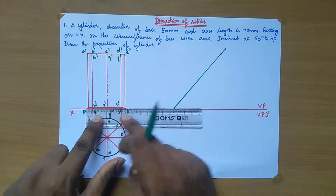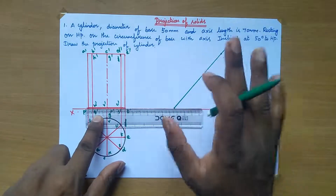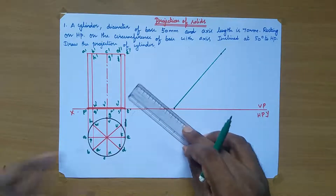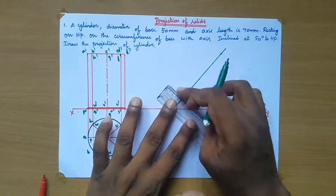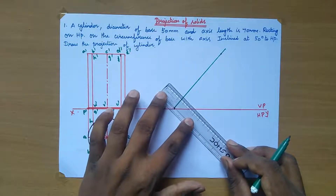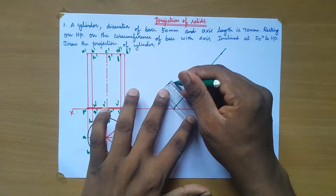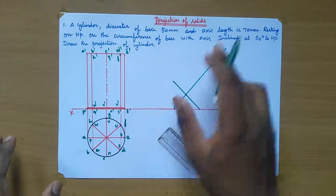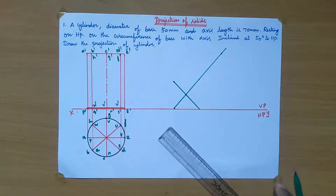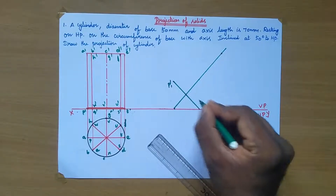At any point, place your protractor and take 50 degrees. Draw a line like this — so now 50 degrees, we drop the axis incline line. In the front view section, we measure the base width. In P dash and T dash, we measure from P dash to T dash: 5 cm. We measure the axis line at 50 degrees to HP. Mark this point as P' and T'.